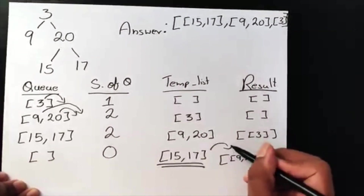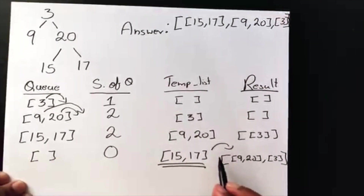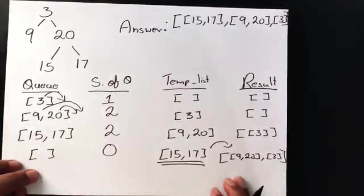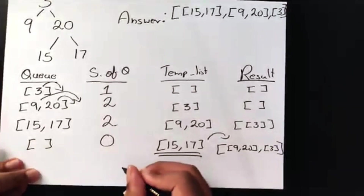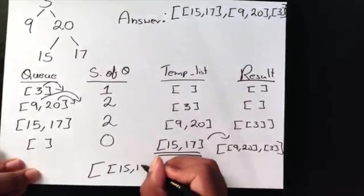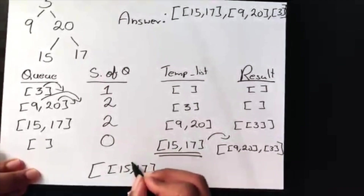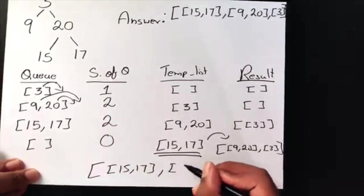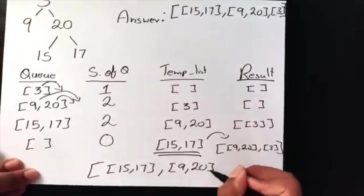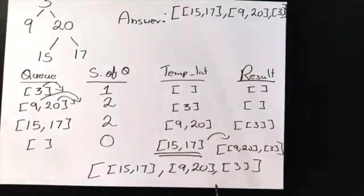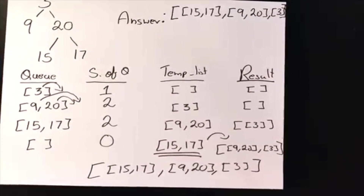Our queue is now empty and its size becomes zero. The last step before exiting is to add the temporary list to the result — again inserting at index 0, not appending. So the final result looks like: [15, 17], then [9, 20], then [3]. And that is our correct final result.